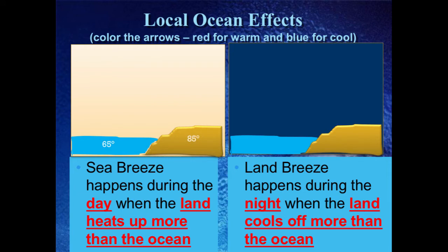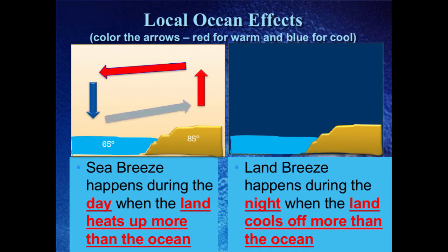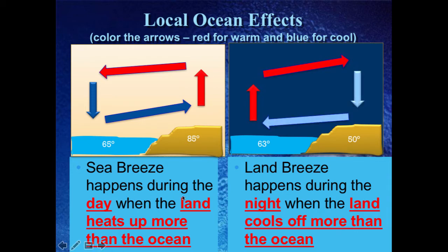Here's the meat of this flip video: land and sea breezes. Because water and land heat up at different rates, it creates a convection current. During the daytime, the water is around 65 degrees while the land is 85. Because land heats up so much faster, the air above the land also heats up faster, causing it to rise. It then moves out over the cooler water, cools off, contracts, and sinks, then moves back to the area of low pressure — creating a convection cell. We call these sea breezes.